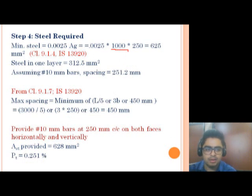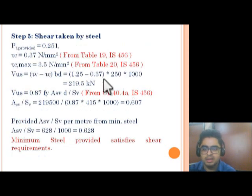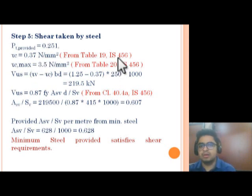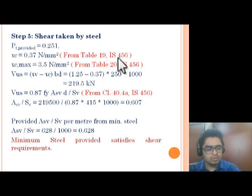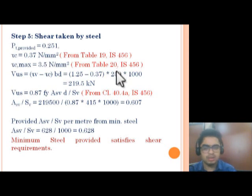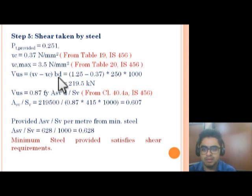Step 5: Shear taken by steel. Pt provided = 0.251%. This value is used to find τc from IS 456 Table 19. For pt = 0.25 and M30 grade concrete with Fe415 steel, τc = 0.37 N/mm² from Table 19. The value from Table 19 is also confirmed. For M30 grade concrete, τc_max = 3.5 N/mm². With width = 1000 mm, Vus = (τv − τc) × b × d = 219.5 kN.